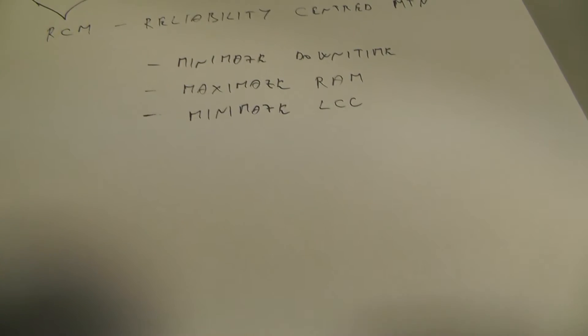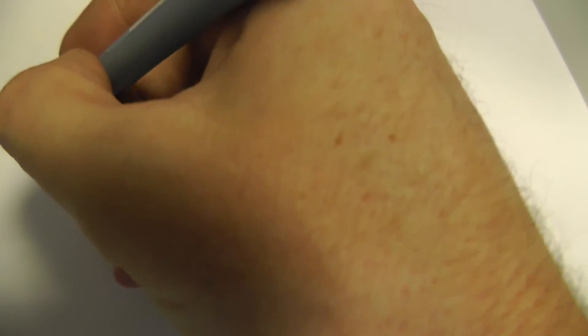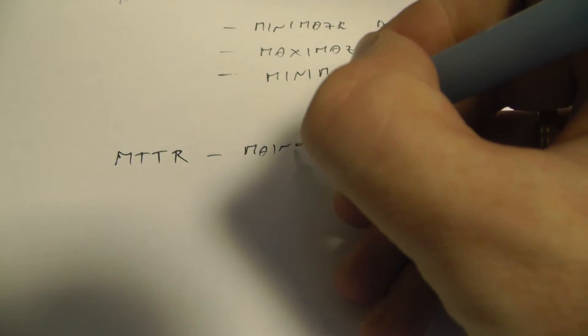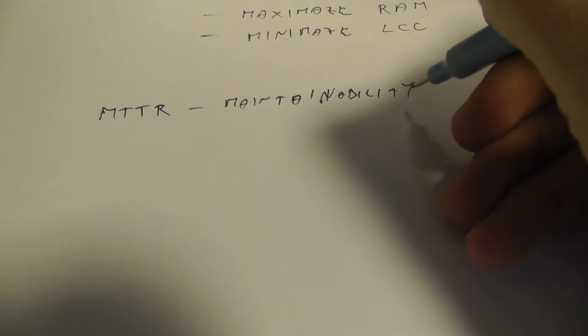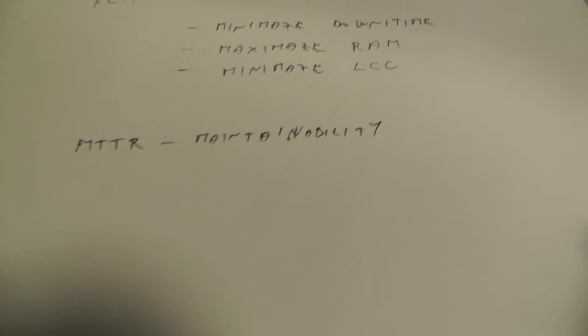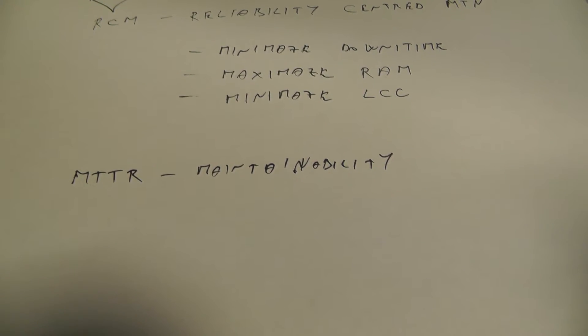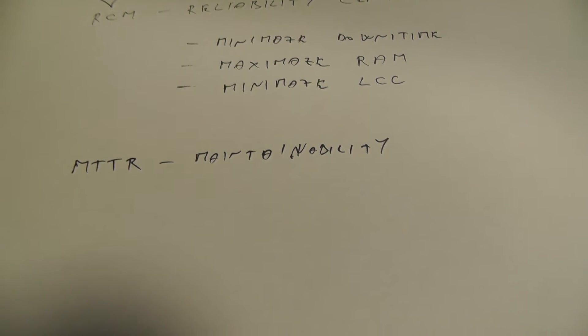Now I can tell you something about maintainability and reliability. What is maintainability? Maintainability is, in fact, MTTR — mean time to repair. That is maintainability, because it is about the organization.